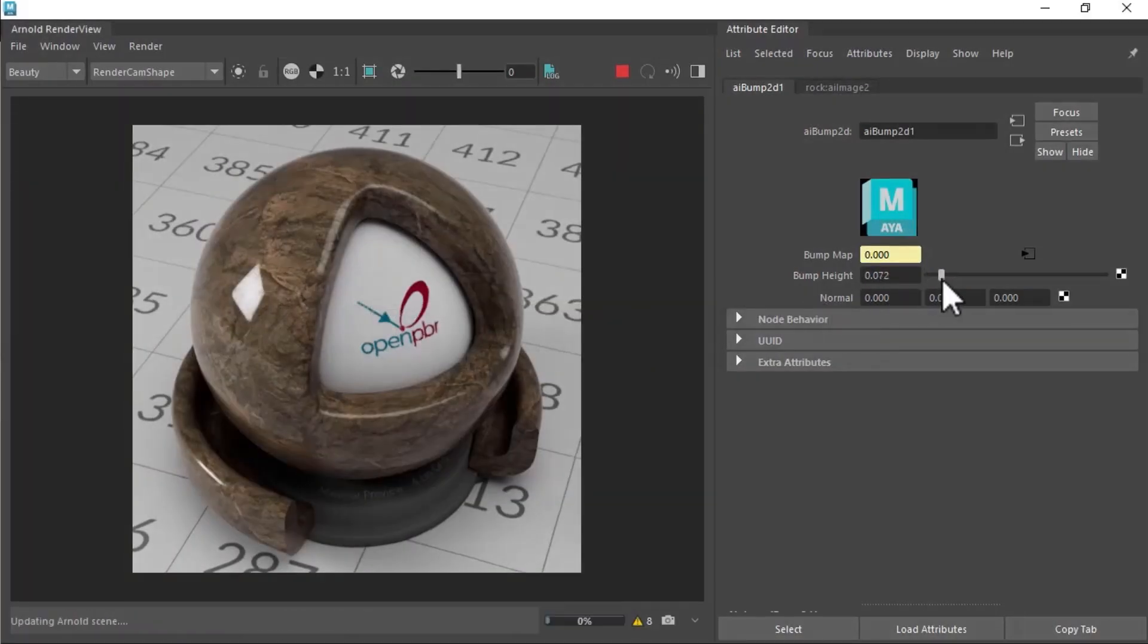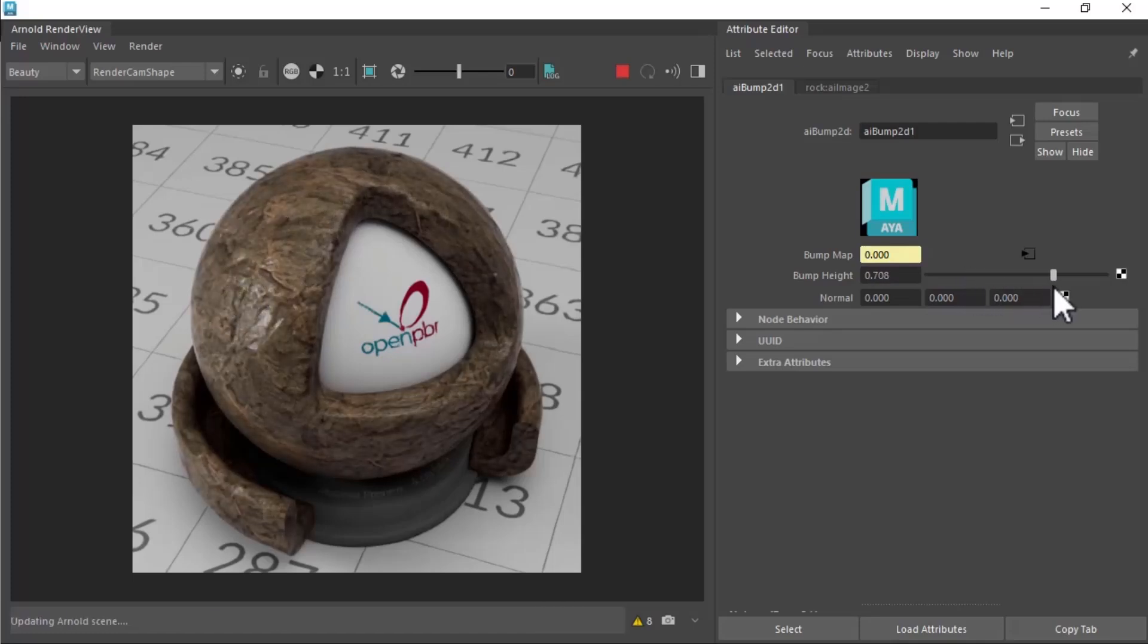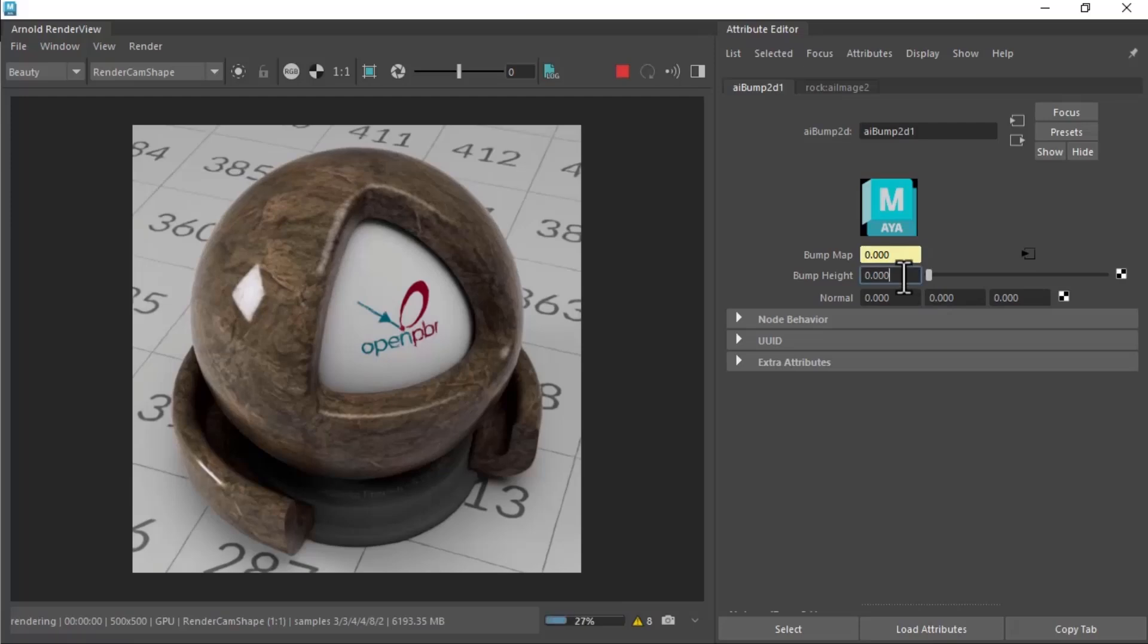We can also add extra detail to the base surface with a bump or normal map. Here we apply a bump map to the base surface, adding detail which breaks up the specular highlights. There can also optionally be a separate bump map for the coat, allowing, for example, the coat to have high resolution scratches different from the base geometry.